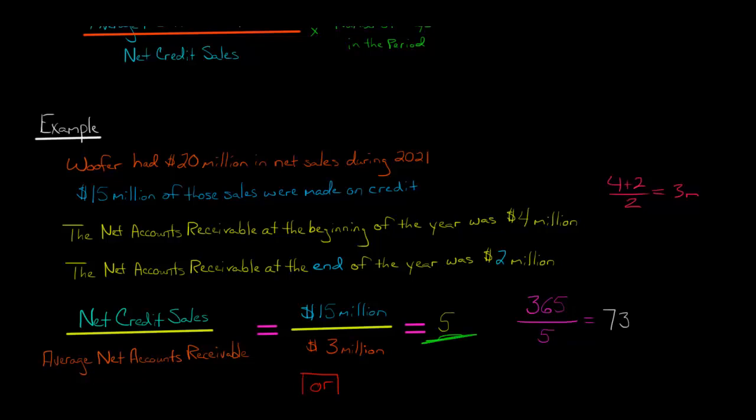Once we know the receivables turnover ratio, we take that 5 and the 365, because we're talking about a year in this case. So 365 divided by 5, that gives us 73. That means it takes the company on average 73 days to collect its accounts receivable.